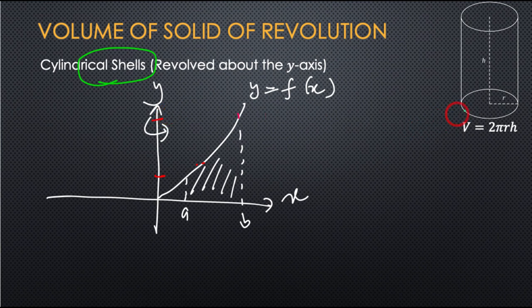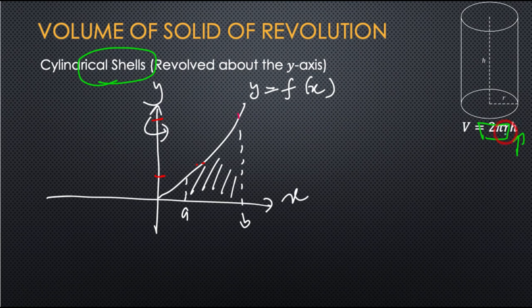What you need to know is the volume of a cylinder. The volume of a cylinder is 2πrh — that is, 2πr added many many times: 2πrh.